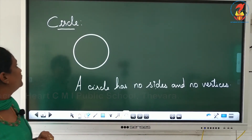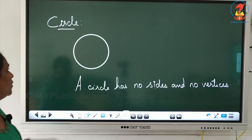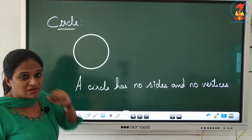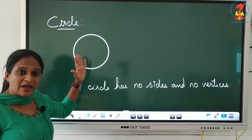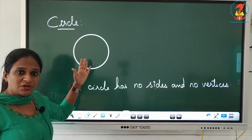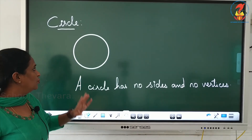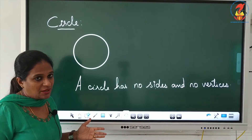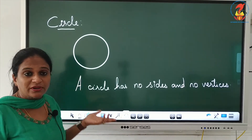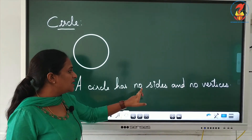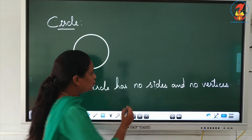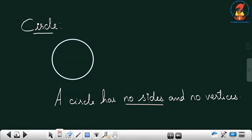Now the last shape is a circle. Does a circle have any corners or vertices? No. Does it have any sides? No. Can you draw any diagonal? No. So a circle has no sides and no vertices.